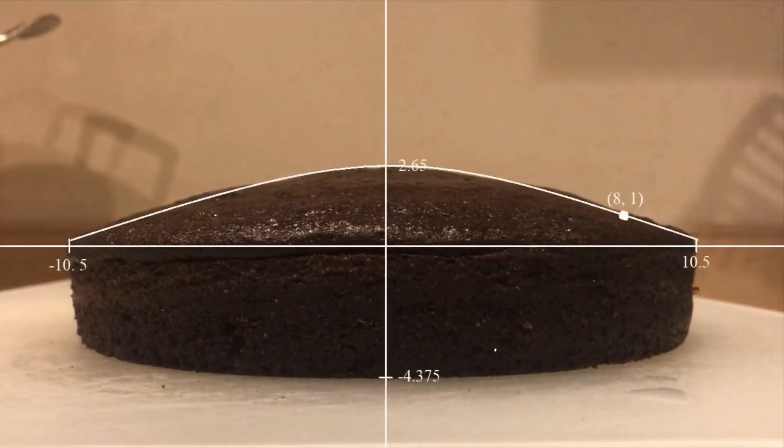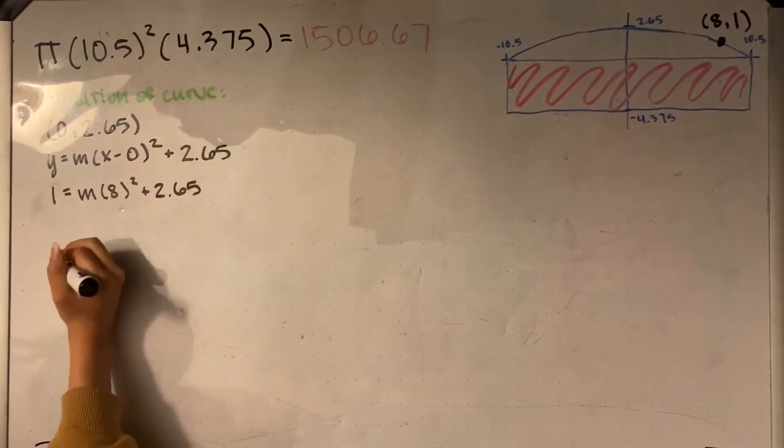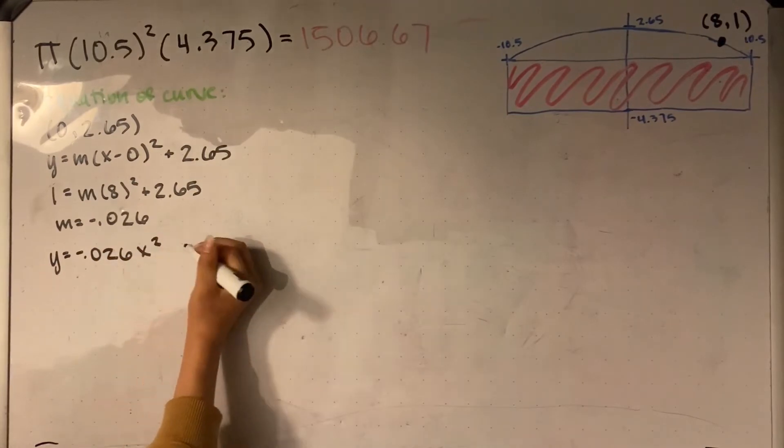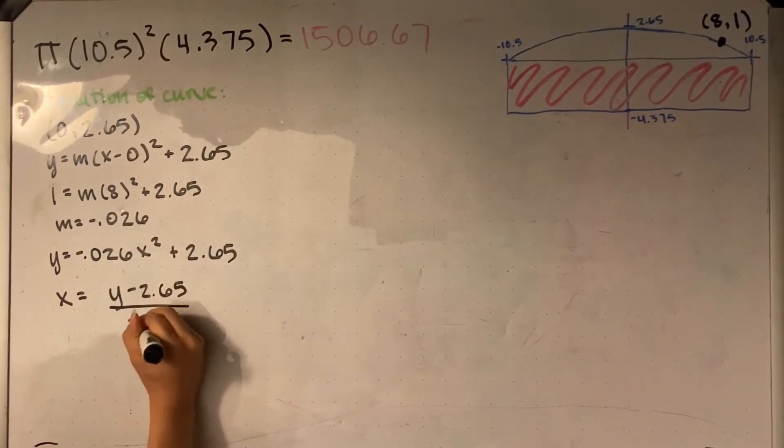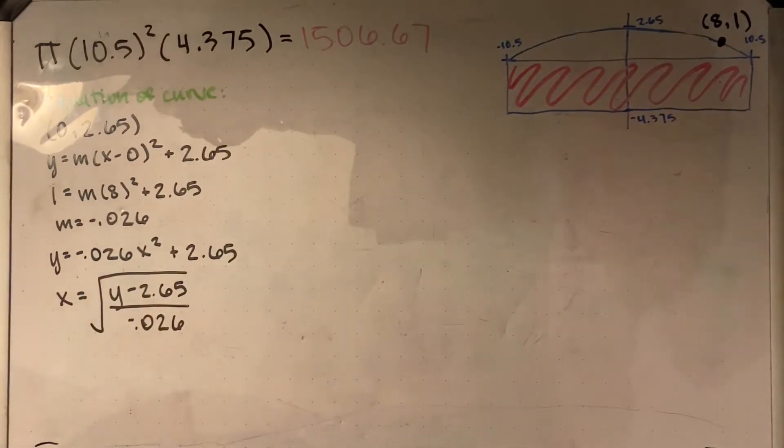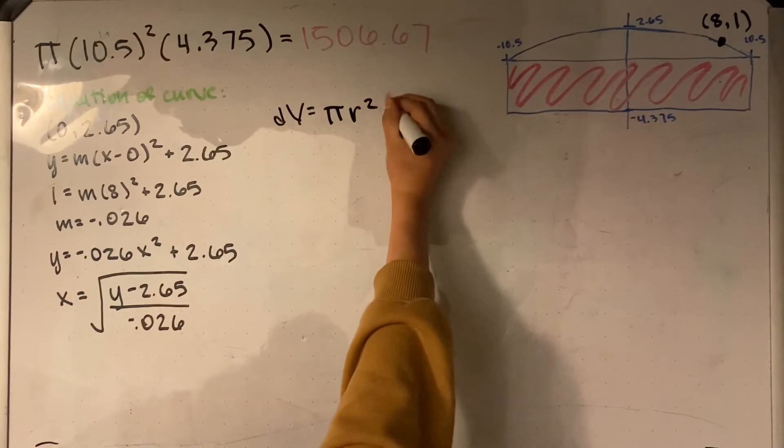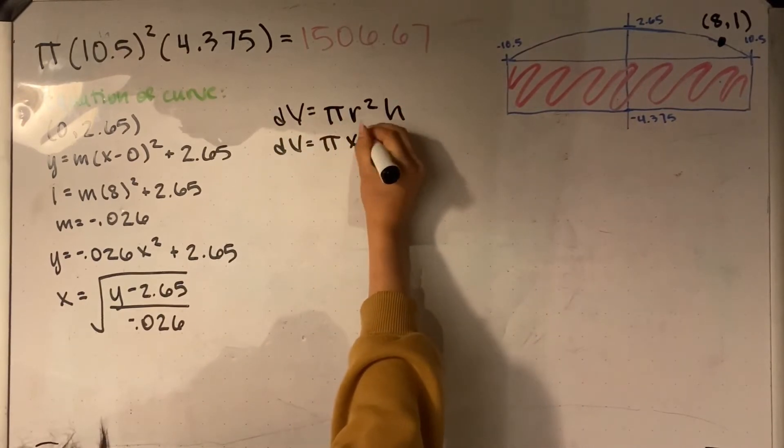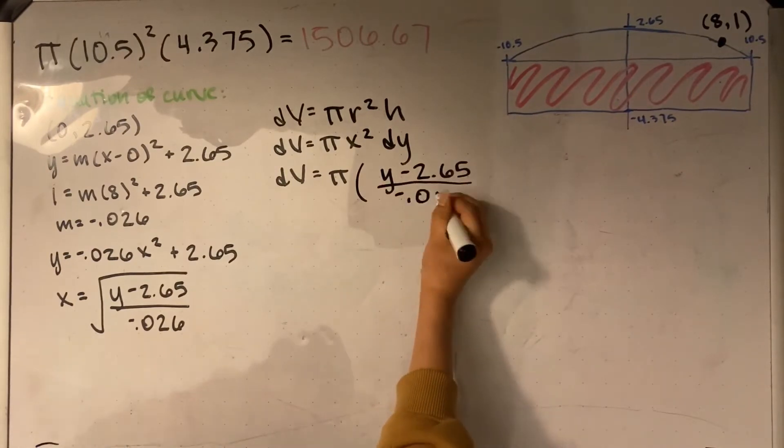This is the curve of the dome top, of which we can find the equation for by plugging in different points into vertex form. From this, we can determine that y equals 0.26x squared plus 2.65. This must also be put into terms of x in order to find the volume. Using this method, we know the equation dv equals pi r squared h. We can replace r with x and h with dy, and then x with the equation of this curve.